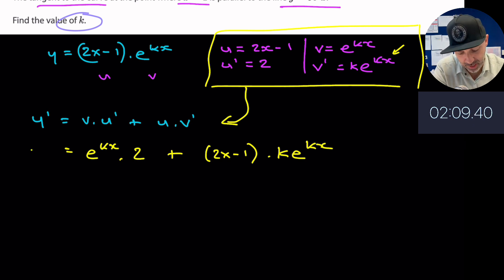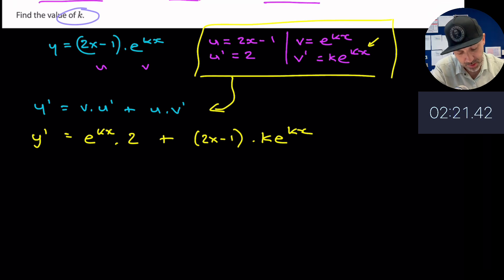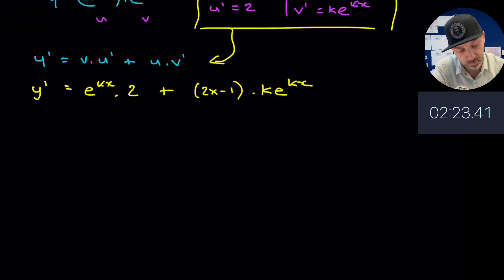Now we have an expression like the gradient function, but it does say clearly in the question that we have to find the gradient when x is equal to 1. So I'm going to substitute x equals 1 into this expression here.